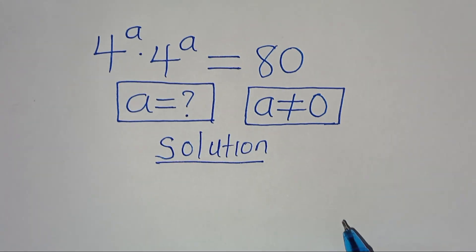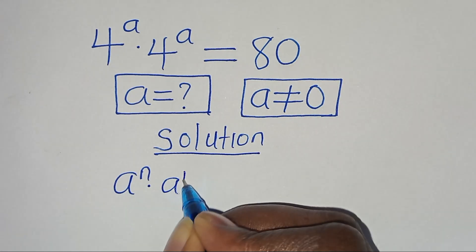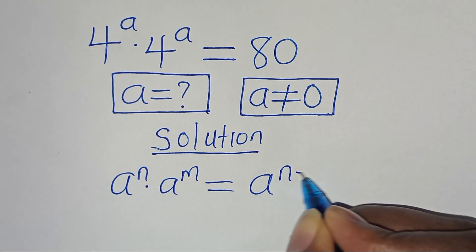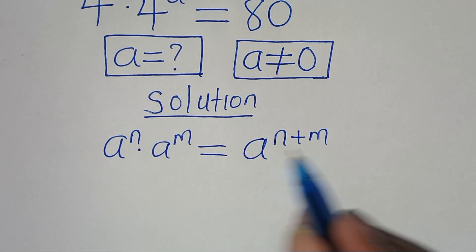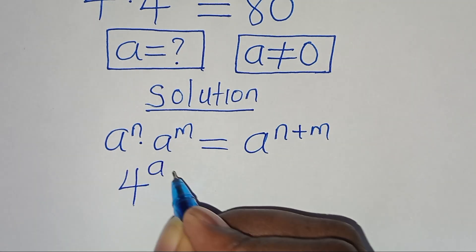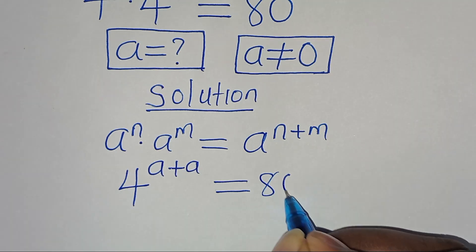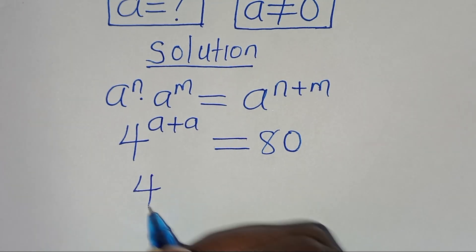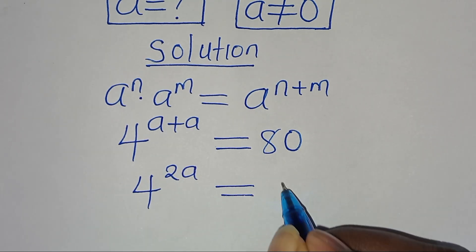This exponential equation is in the form of a to the power of n times a to the power of m, which we can express as a to the power of n plus m. Applying this exponent property, we have 4 to the power of a plus a, which equals 80.